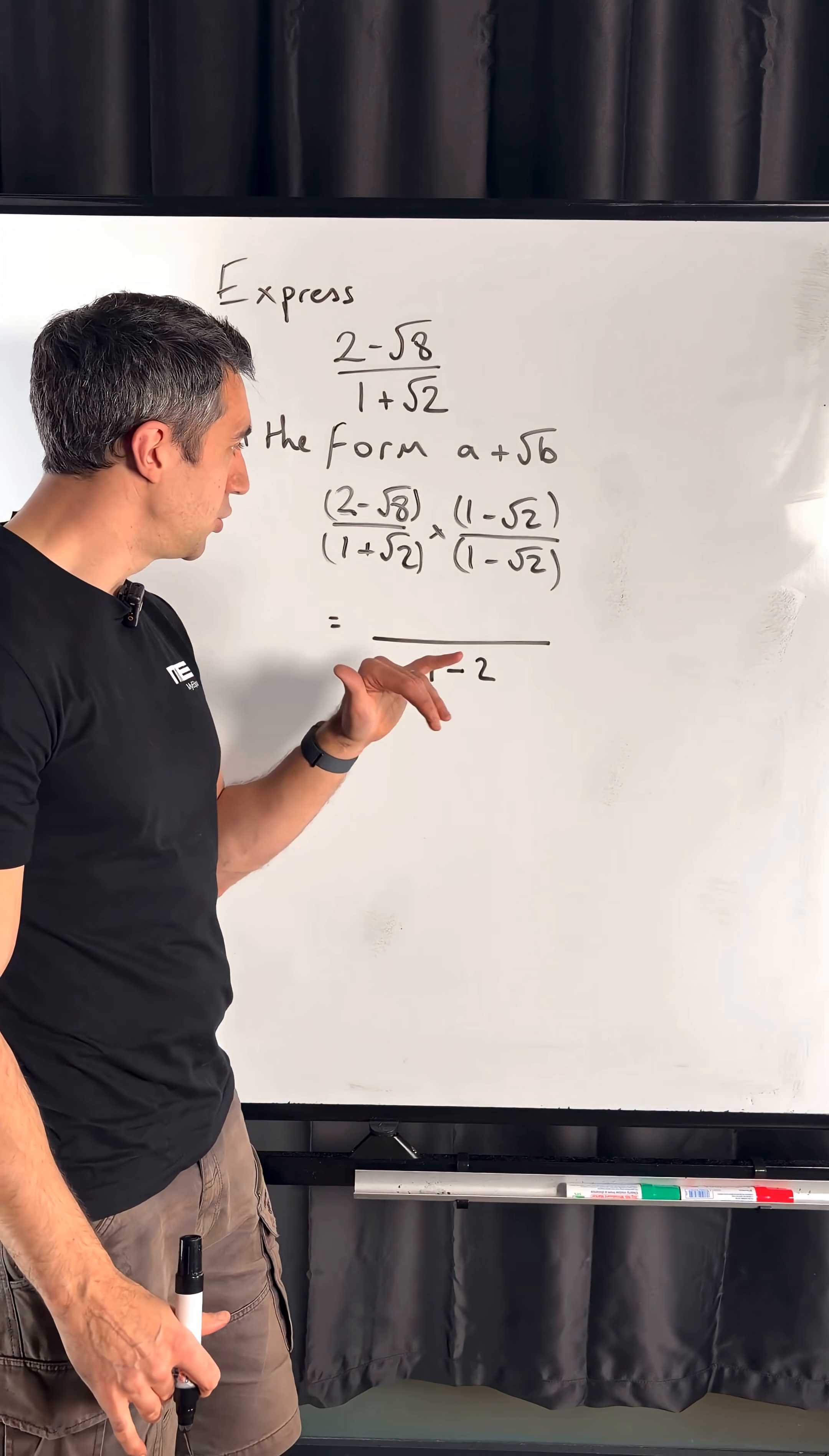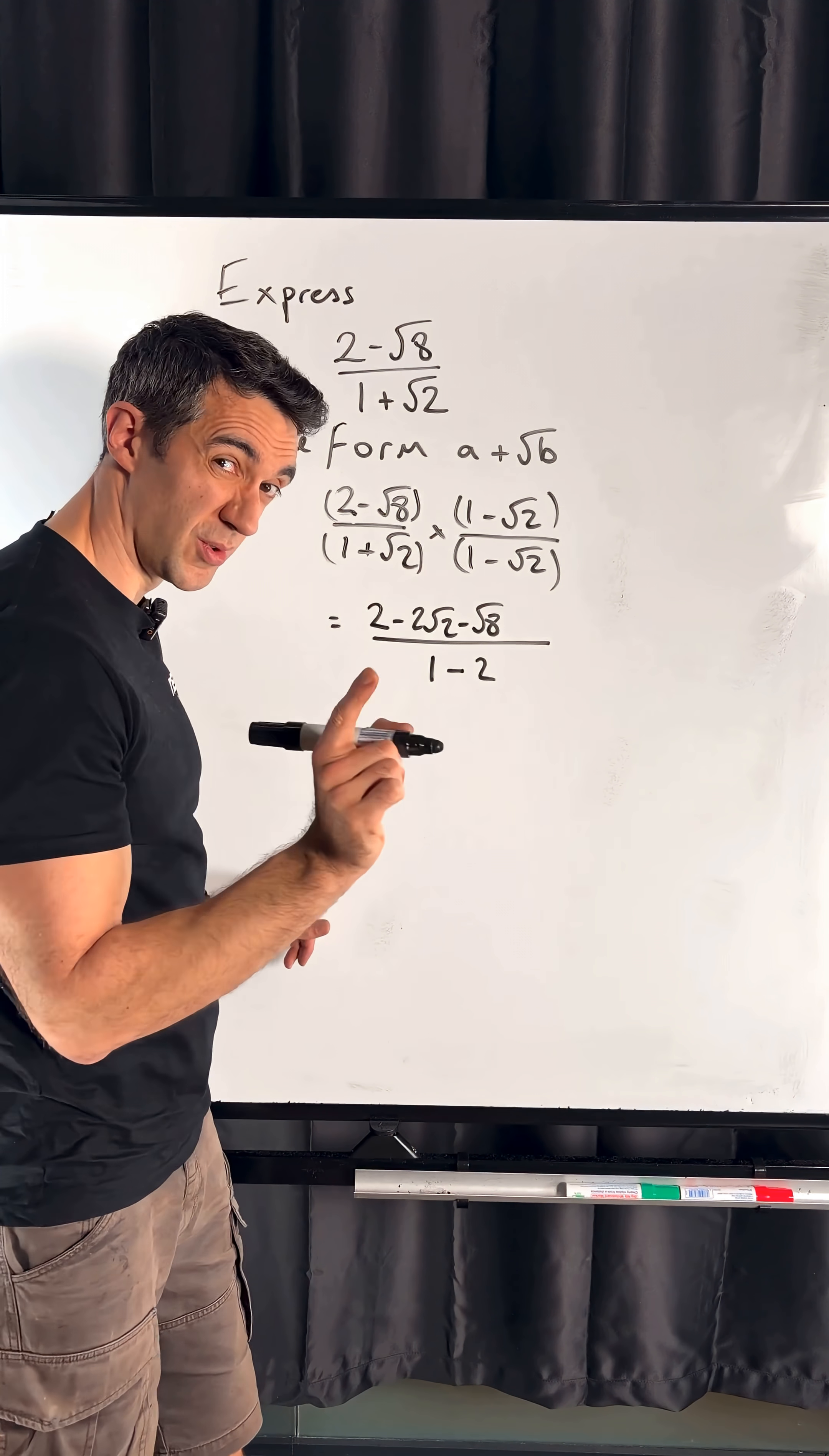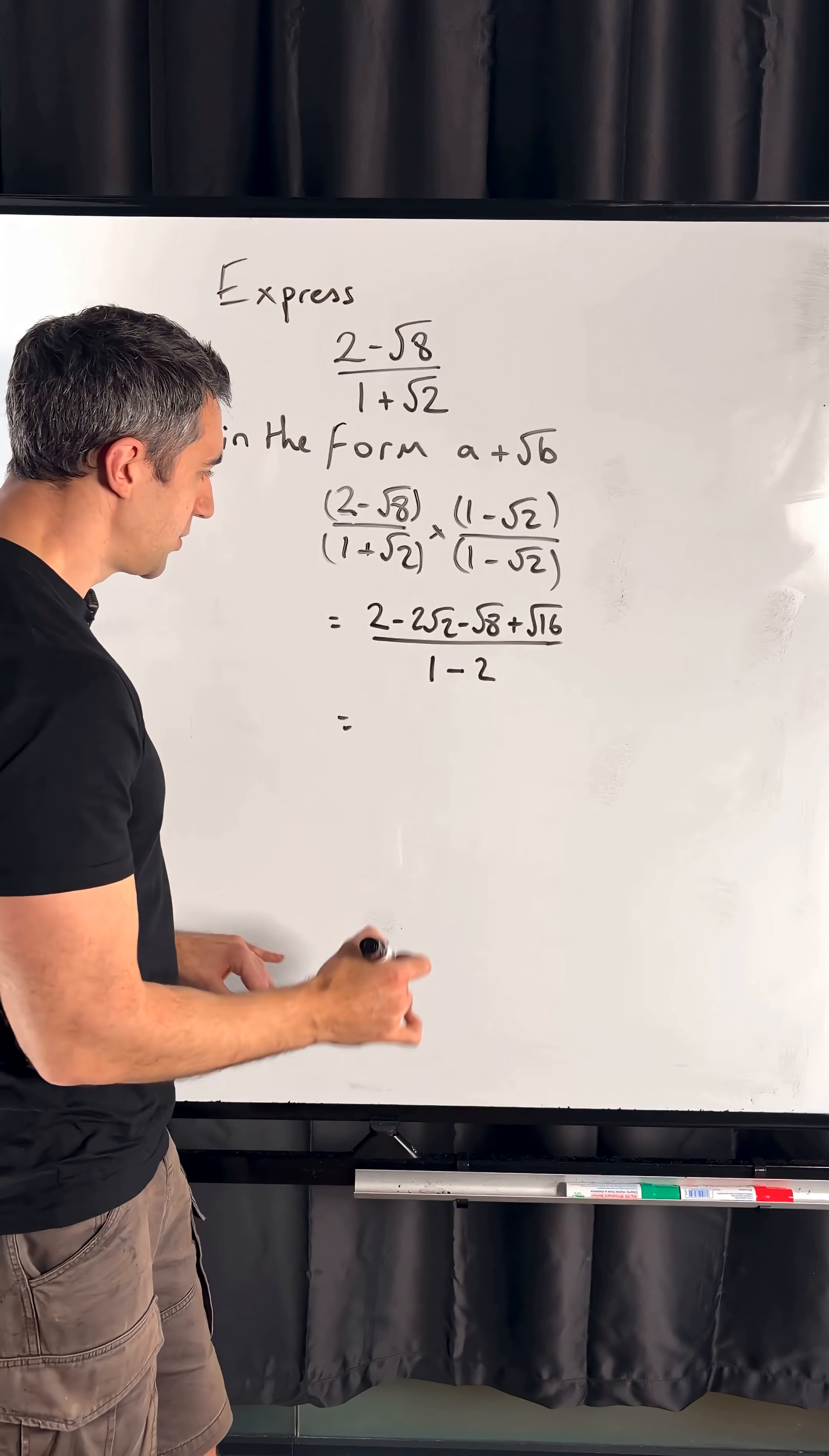Numerator, we've got to do our double brackets like normal. So I've got 2 times 1, 2 times minus root 2, and I've got minus root 8 times 1. And then minus root 8 times minus root 2 gets me plus root 16 using our rules like normal.